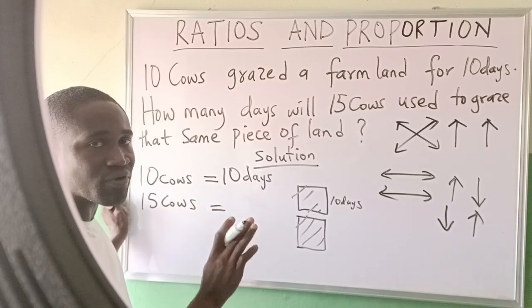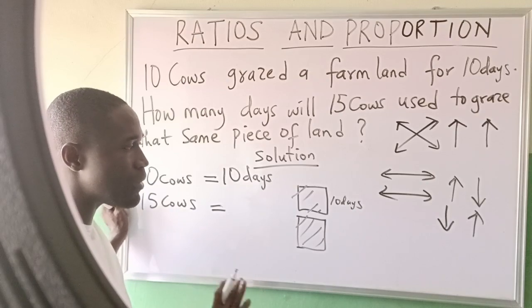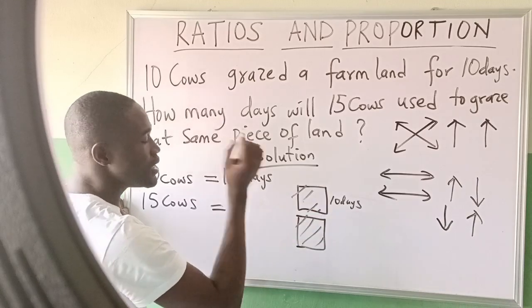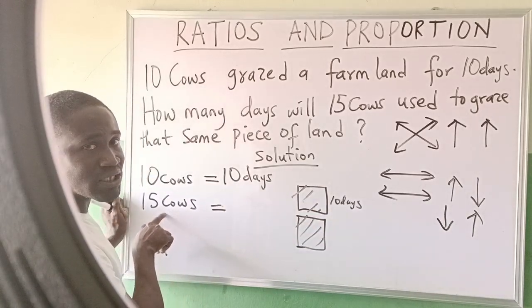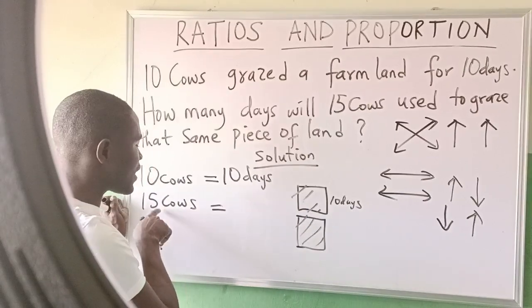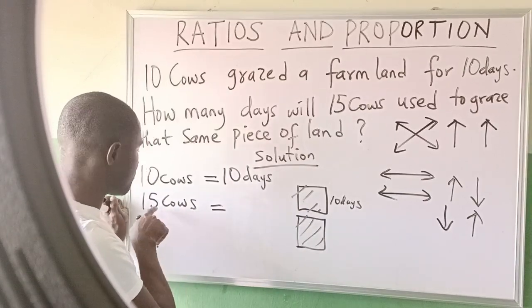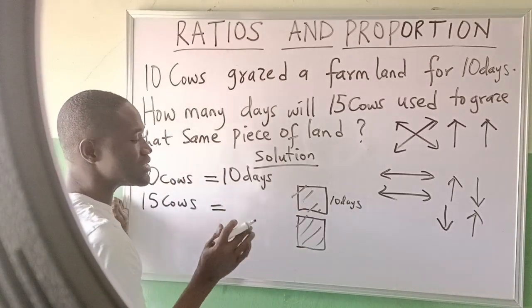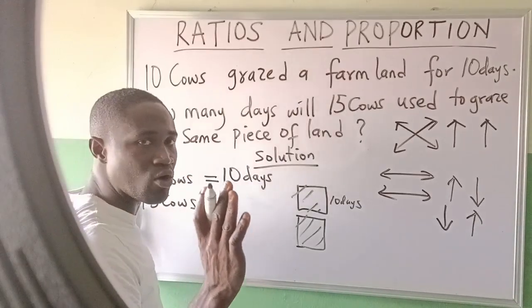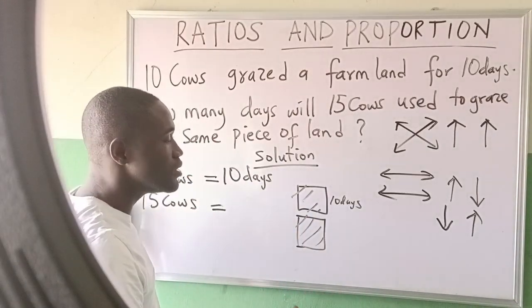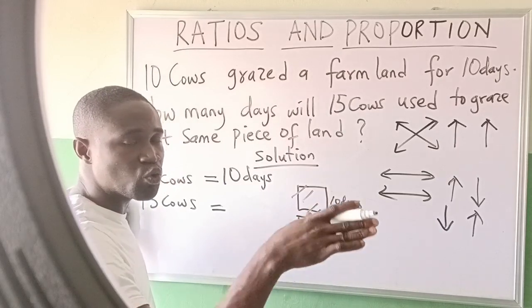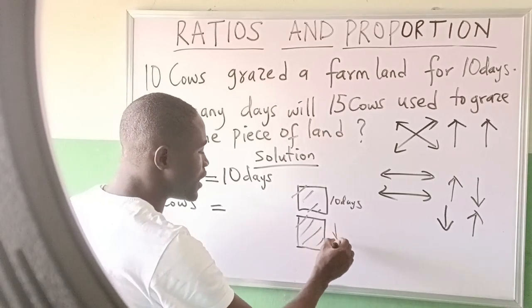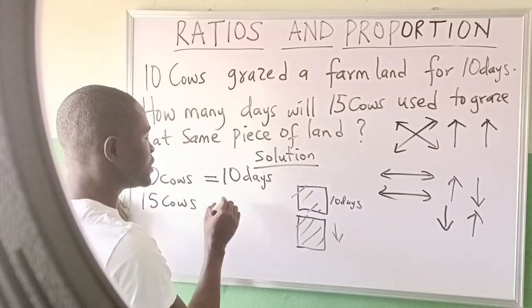So if 10 cows finish this in 10 days, and the number of cows increases to 15 — that is an increase of 5 making it 15 — you will notice that with a small number of additional cows joining in eating the grass, the number of days they will use will be lesser. It will not reach 10, so the number of days will be less.